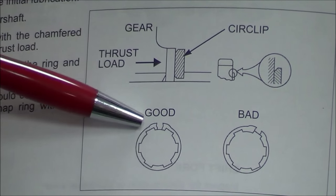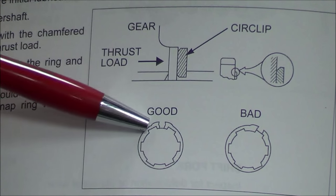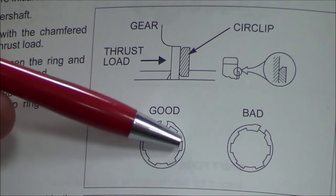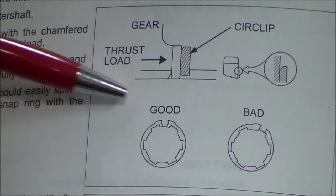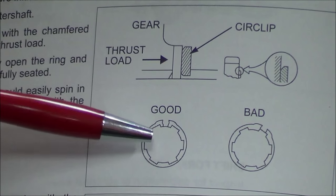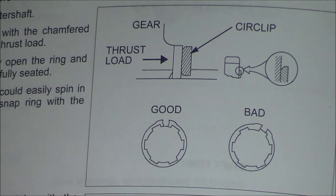What you'll see here on the good is that these raised splines here, one, two, three, four, five, six, all have a circlip part of this fully around them. You'll notice the gap is in between there, but the raised portions are fully supported.